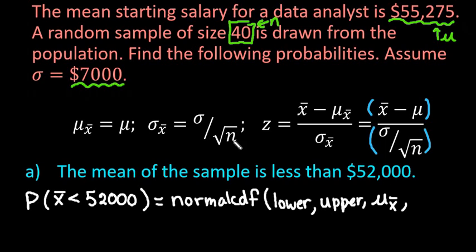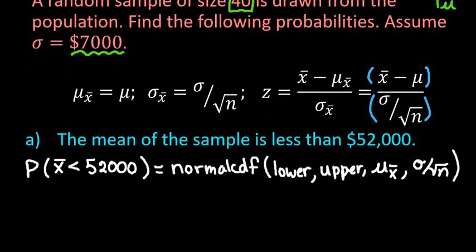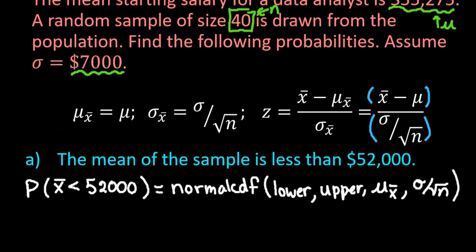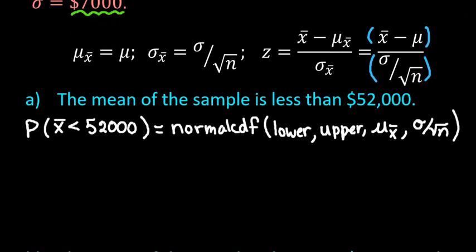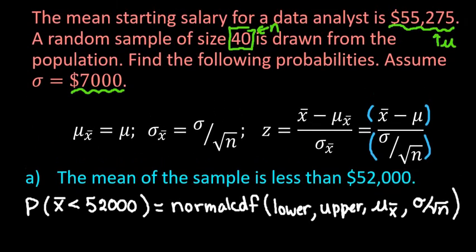You have to make sure you use sigma sub x-bar, so you must enter sigma divided by the square root of n into your calculator. This is what we're going to enter for all of these problems, which is why it's important to have all of that information ready.